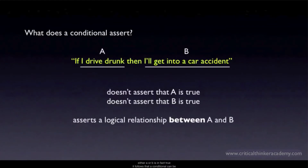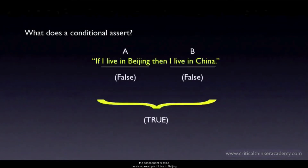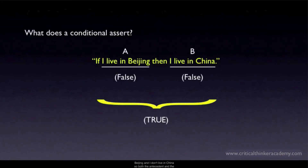It follows that a conditional can be true even when both the antecedent and the consequent are false. Here's an example: if I live in Beijing, then I live in China. I don't live in Beijing and I don't live in China, so both the antecedent and the consequent are false. But this conditional is clearly true — if I did live in the city of Beijing, I would live in China.